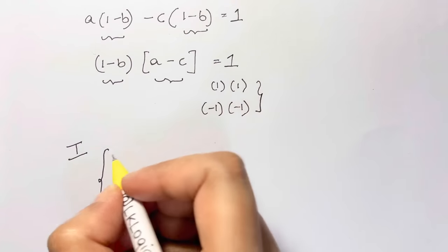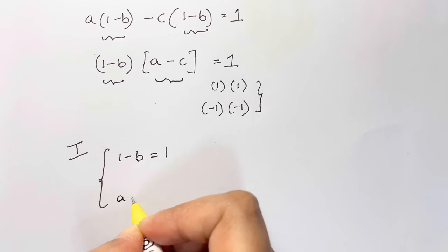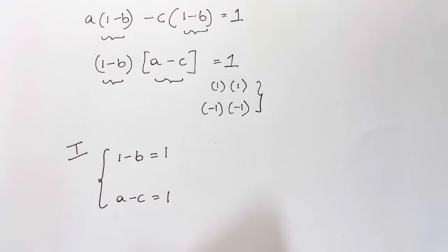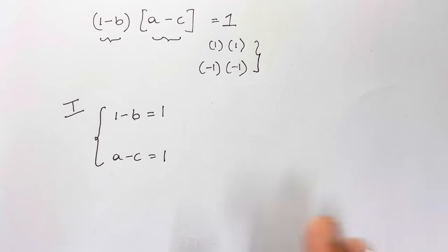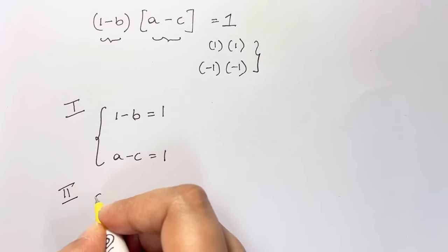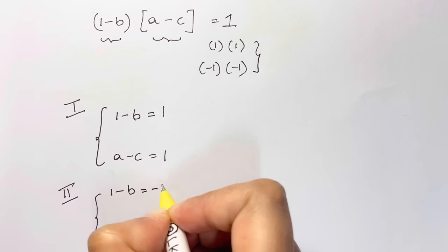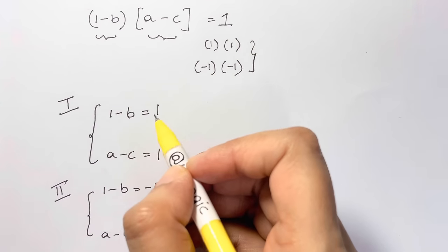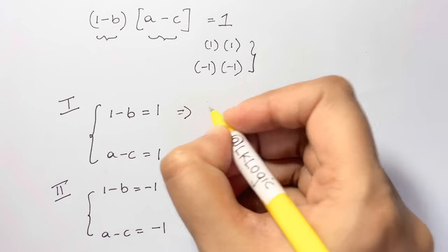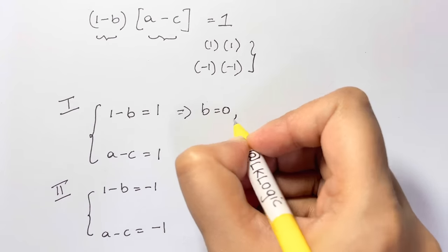The first case: (1 minus b) = 1 and (a minus c) = 1. The second case: (1 minus b) = negative 1 and (a minus c) = negative 1.